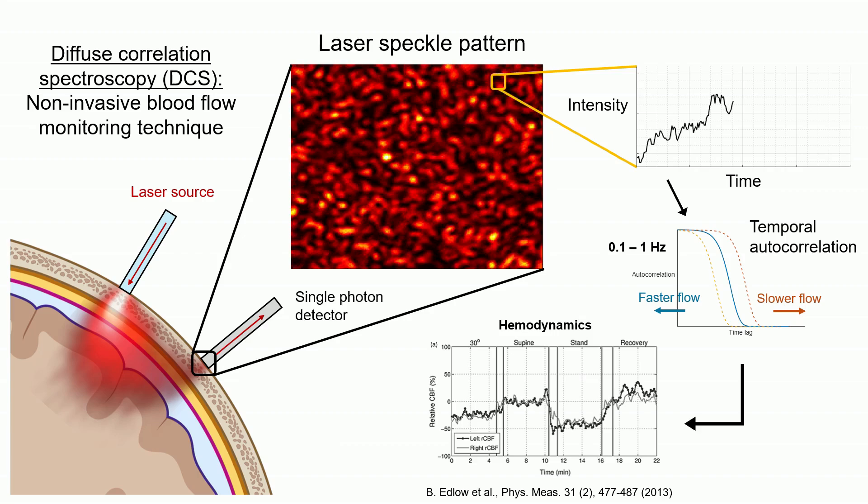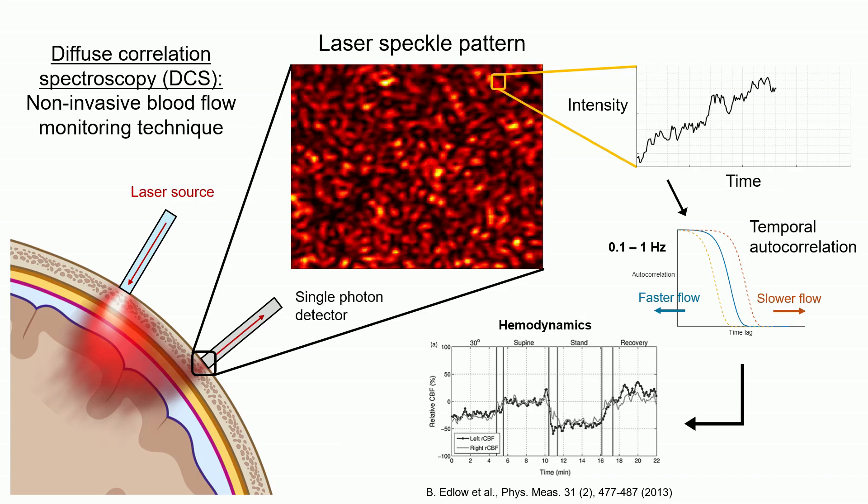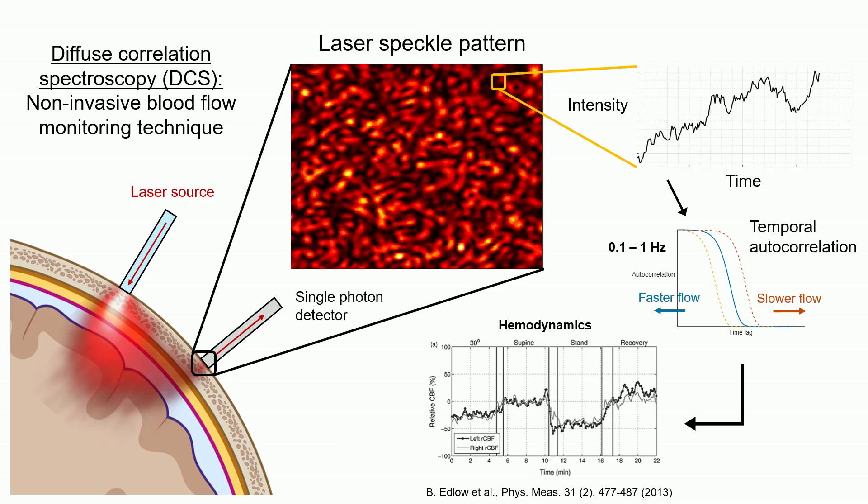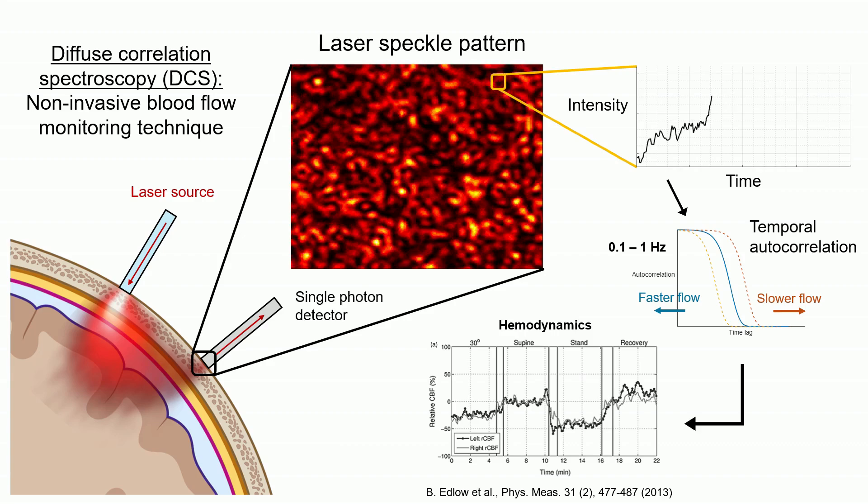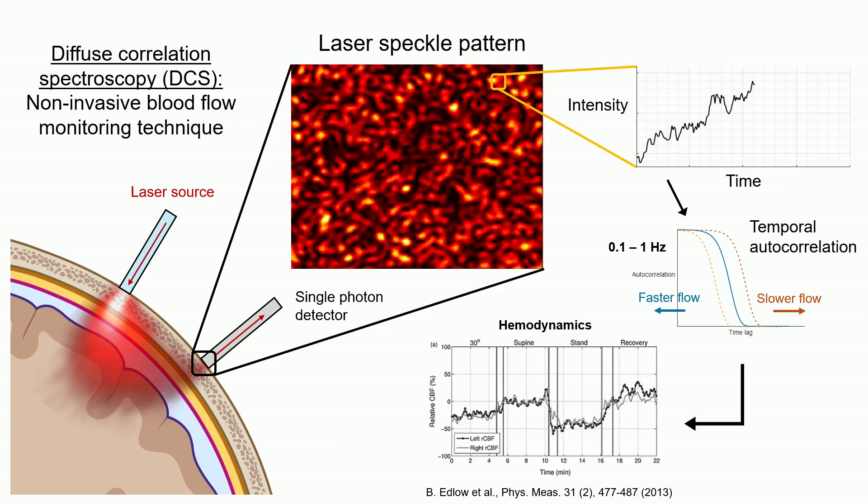This correlation has an exponential decay, and the rate of this decay can be used to recover tissue blood flow. In other words, faster and slower decays imply faster or slower hemodynamics, respectively.